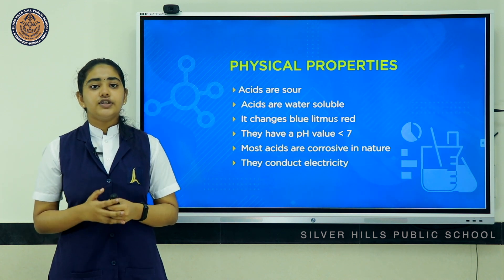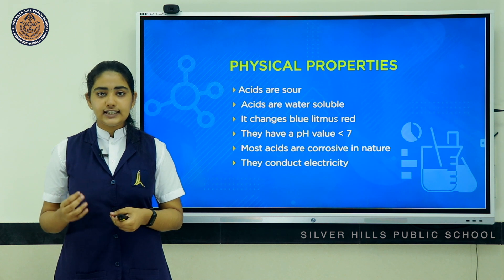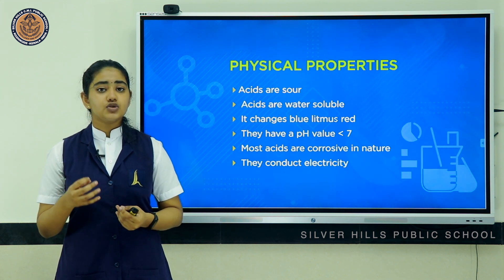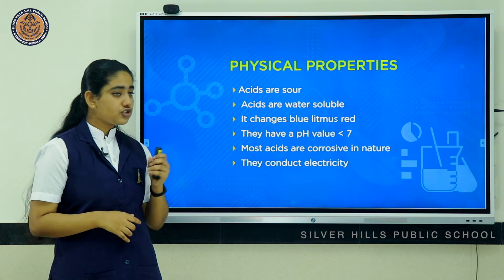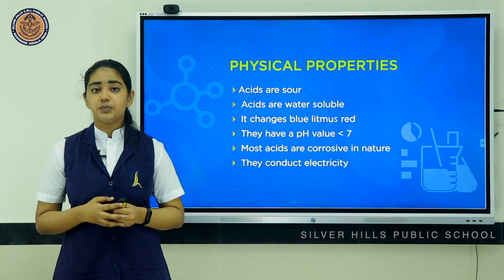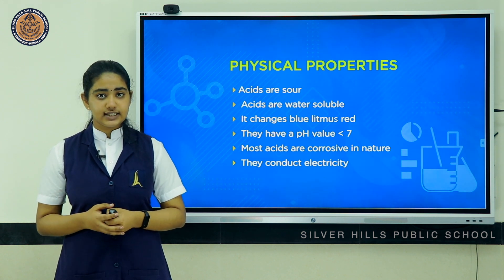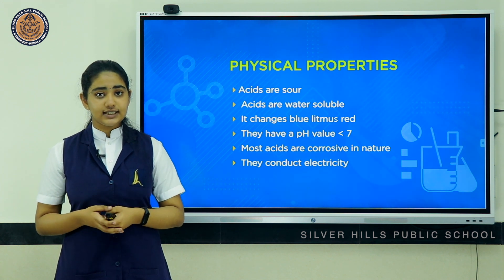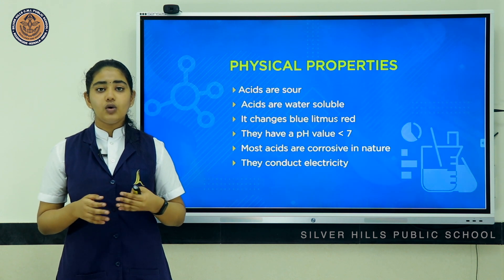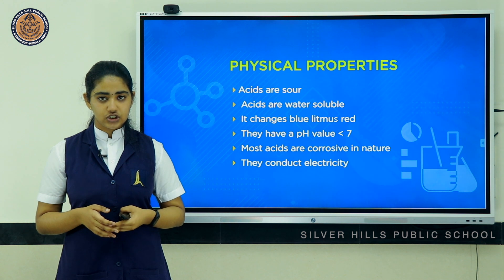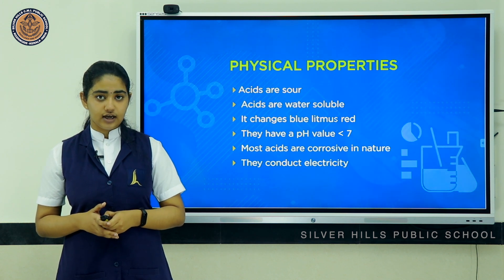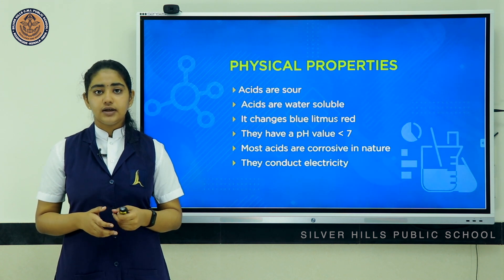Let us move on to the physical properties of acids. Most of these properties are those which we have learnt in our lower classes. Generally, acids are sour in taste and are water soluble. Acids change blue litmus red. Litmus is an indicator which is purple in colour — it changes red with an acid and blue with a base. Indicators are substances that indicate the acidic or basic nature of a solution by colour change or change in smell. Some common indicators used in laboratories are litmus, phenolphthalein, methyl orange, etc.